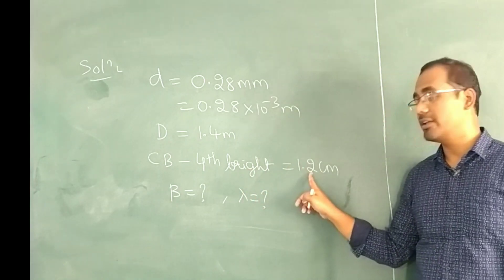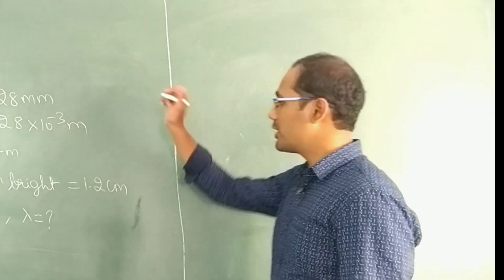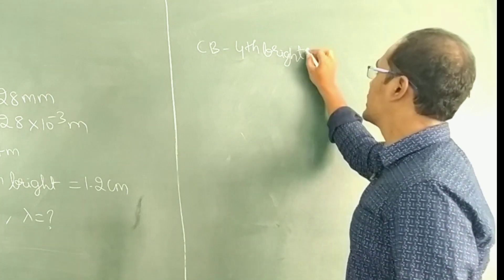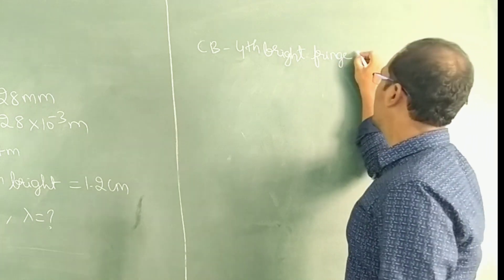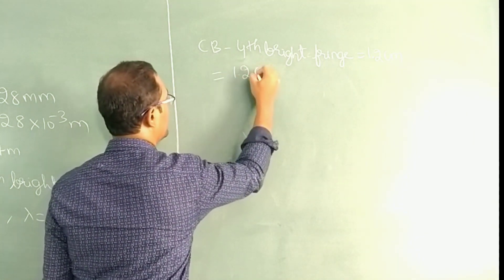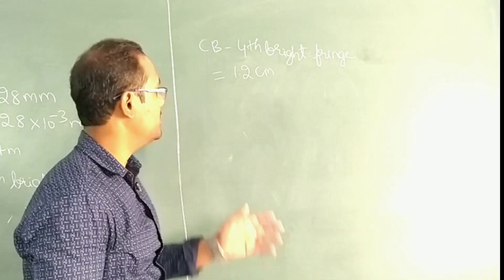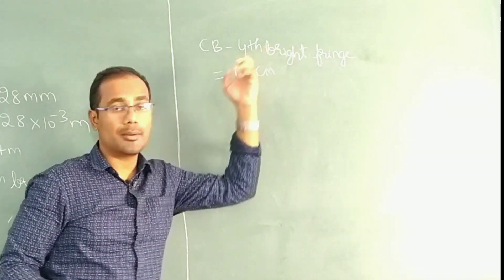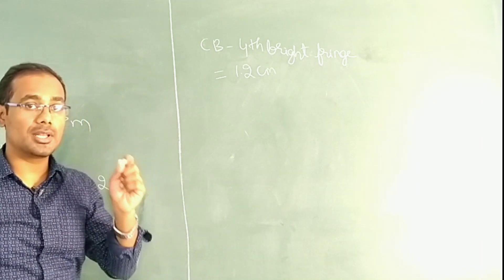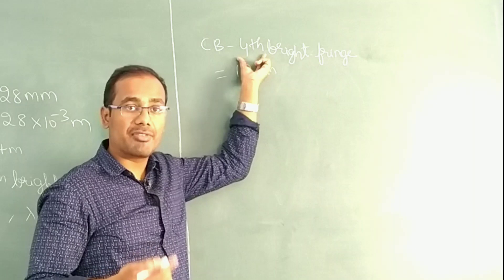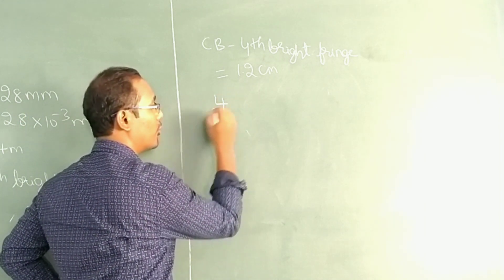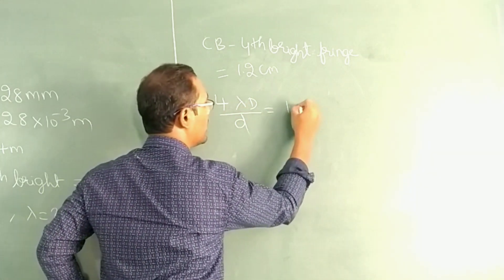Using the difference between the central bright and the fourth bright fringe, the difference is 1.2 centimeter. The bright fringe position is N × lambda D by d. Since this is the fourth bright fringe, N = 4. So 4 × lambda D by d = 1.2 centimeter, which is 1.2 × 10⁻² meter.